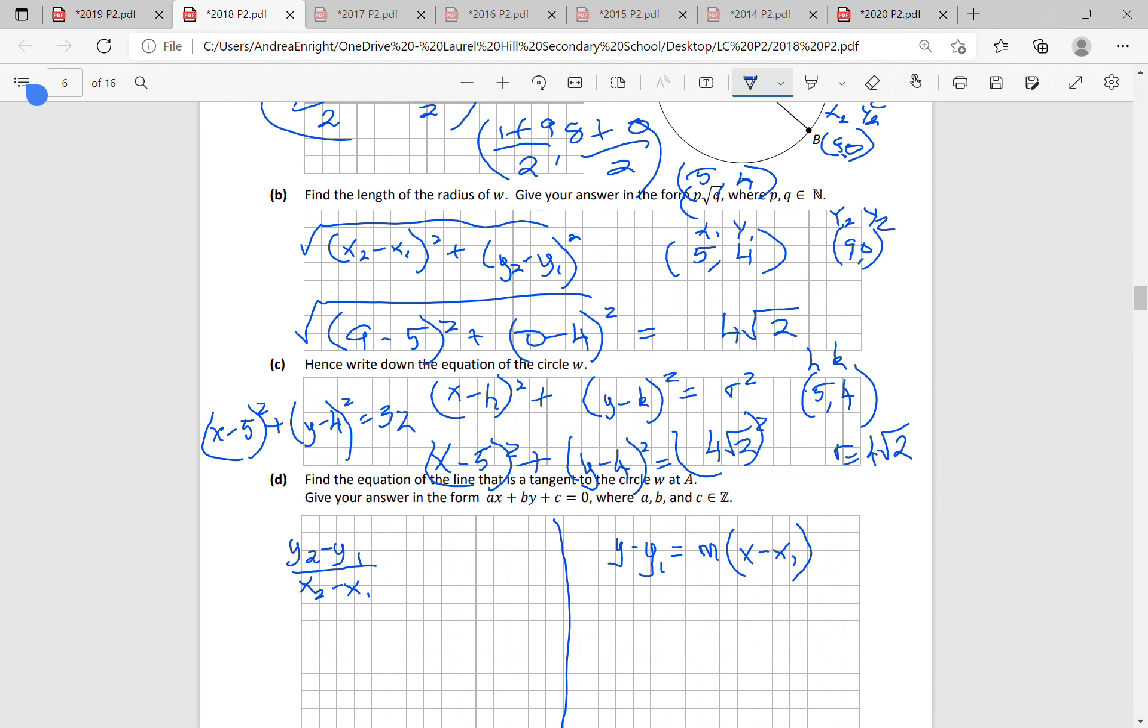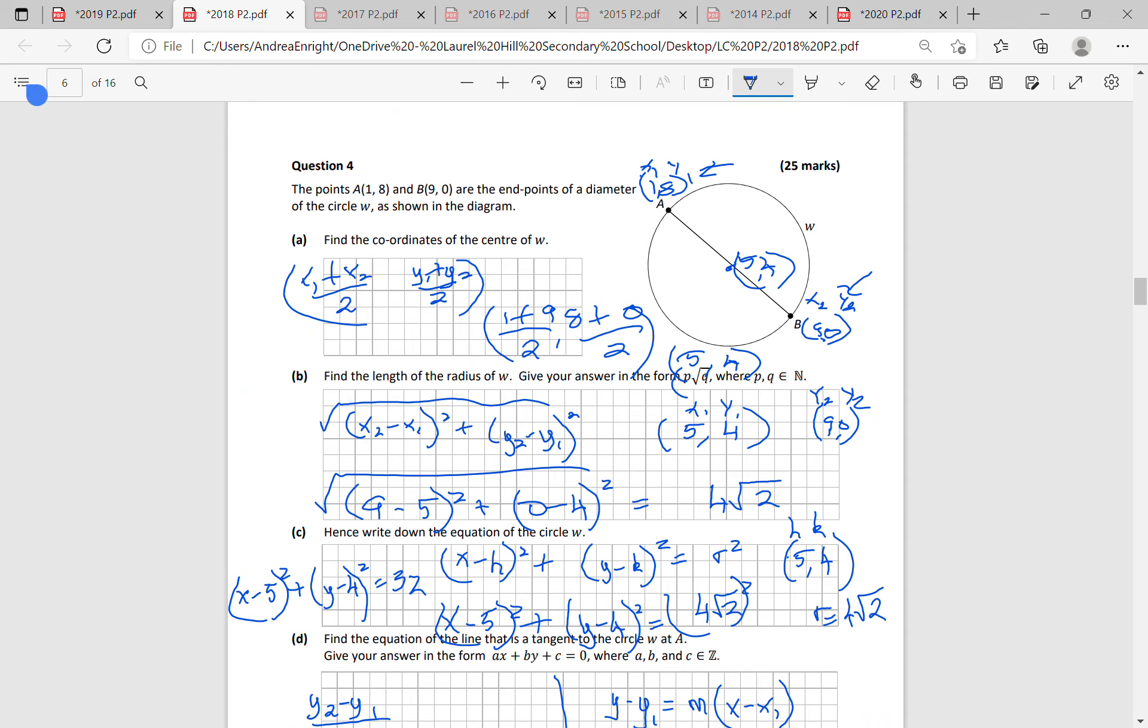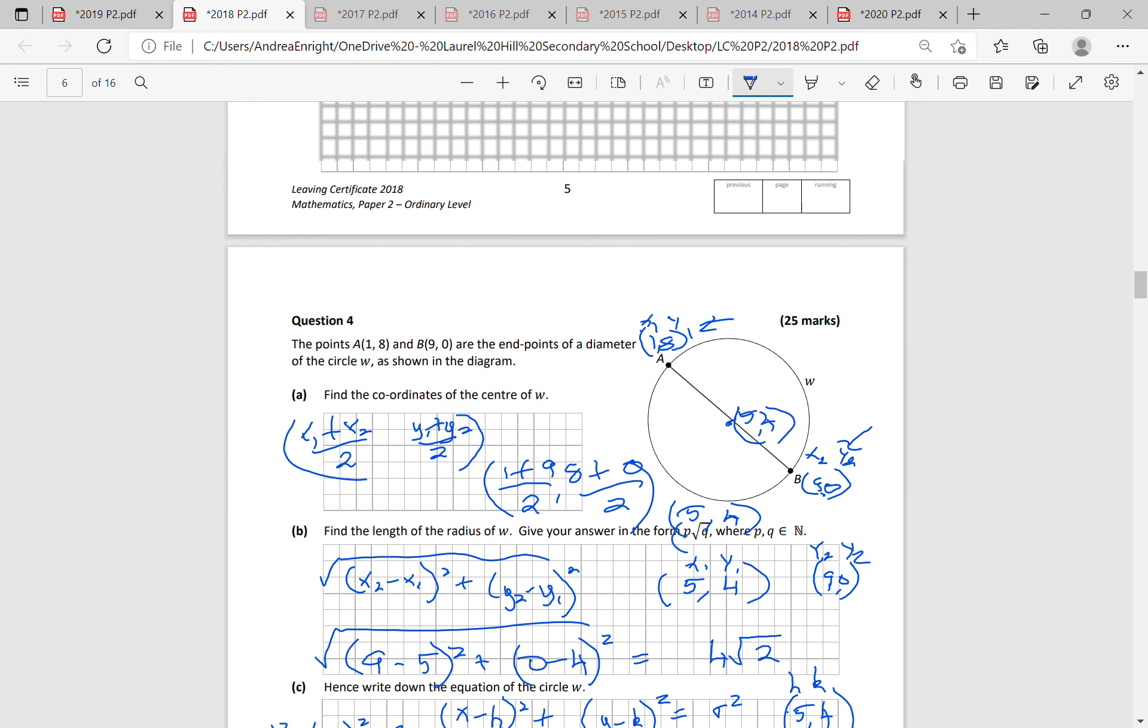Find the equation of the tangent line. Now we're going into the equation of a line that is a tangent to this circle at point A. So a tangent, remember, it touches the circle at one point only, right? So it touches at A and it's perpendicular to the radius at that point. So we want to get the equation of this line here.